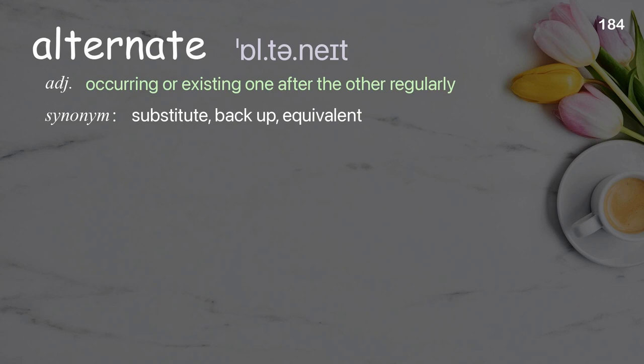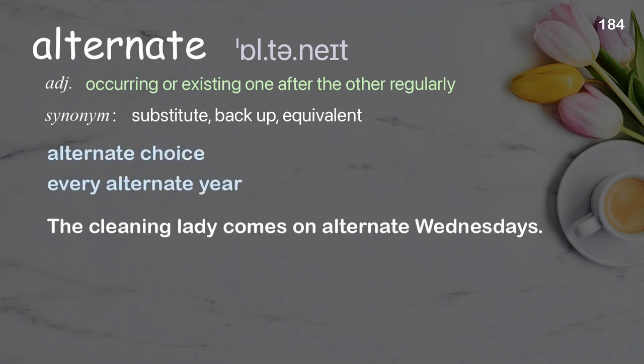Alternate: occurring or existing one after the other regularly. Examples: Alternate choice. Every alternate year. The cleaning lady comes on alternate Wednesdays.